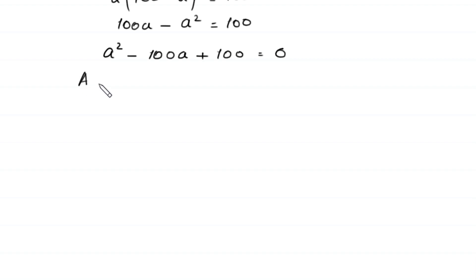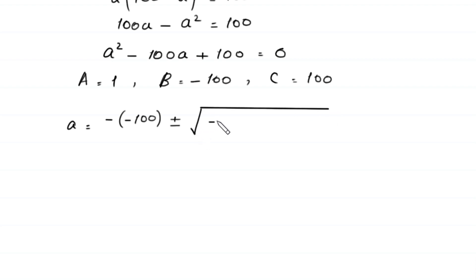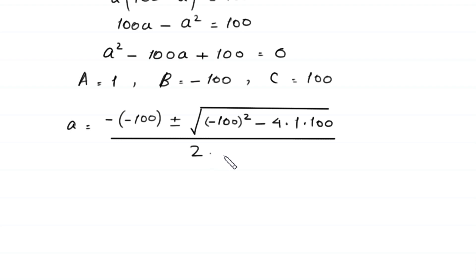In this equation, a equals 1, b equals negative 100, and c equals 100. According to the quadratic formula, A equals negative b, which is negative 100, plus or minus the square root of b squared minus 4 times a times c, all divided by 2 times a.